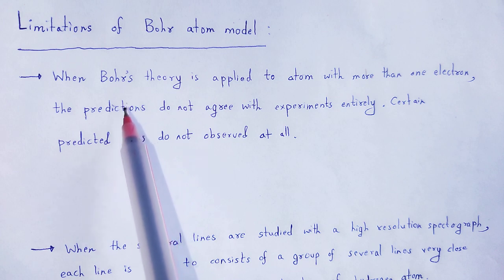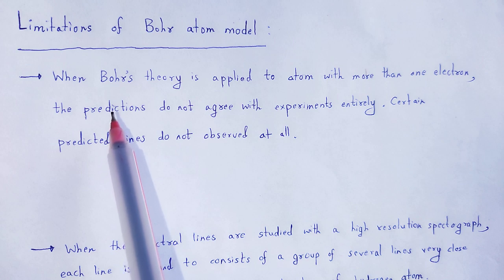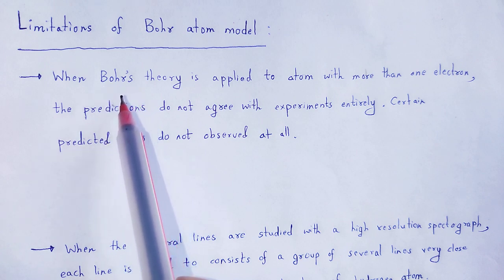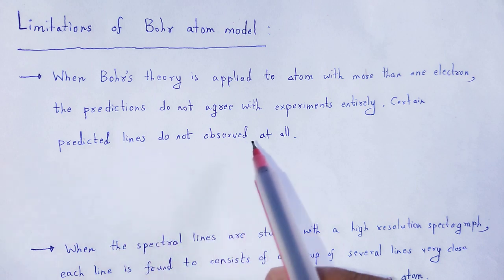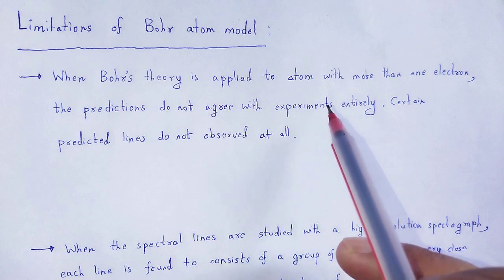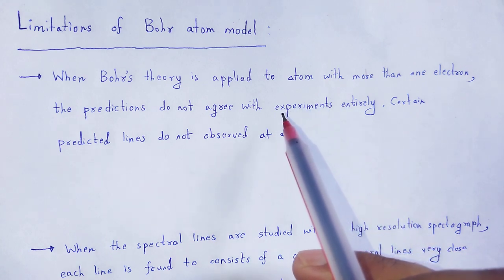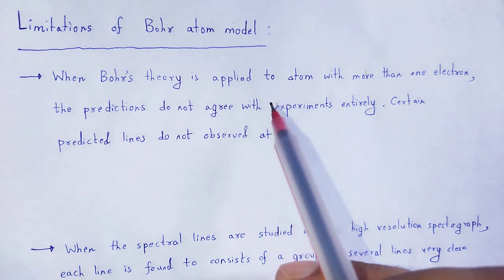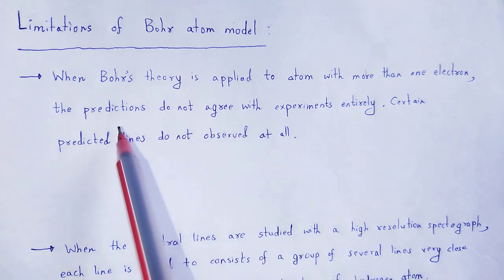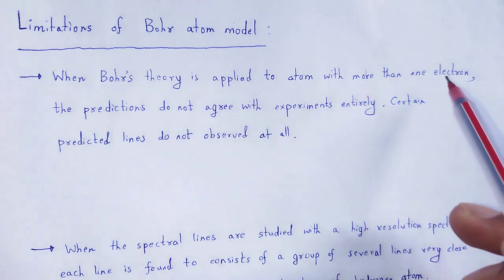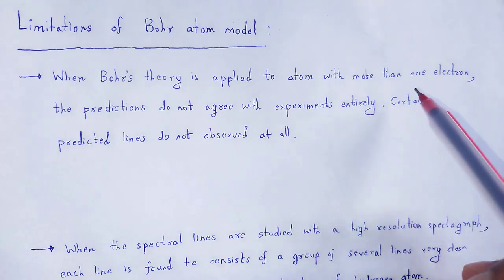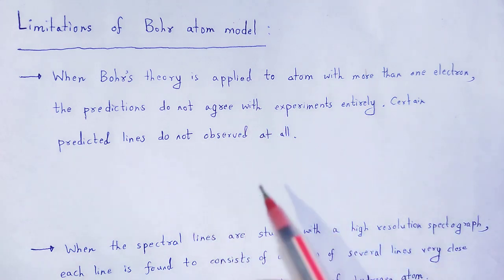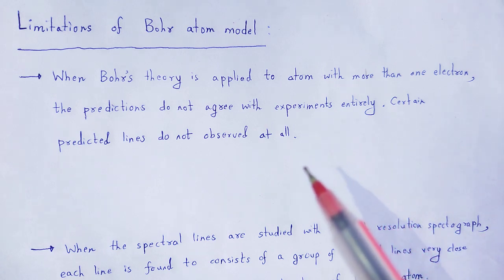In the case of hydrogen atom, there is one electron, and all the postulates are valid for hydrogen atom. When we experimentally deal with other atoms — atoms in which there are two or more electrons — the predictions are totally different compared to the one-electron case. That is why Bohr's model cannot explain the spectra of multi-electron atoms.